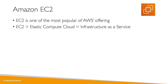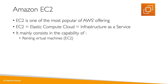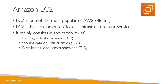EC2 is not just one service — it's composed of many things at a high level. You can rent virtual machines on EC2, called EC2 instances. You can store data on virtual drives or EBS volumes. You can distribute load across machines with an Elastic Load Balancer, and you can scale services using an autoscaling group, or ASG. We will see all of these in depth during this course.